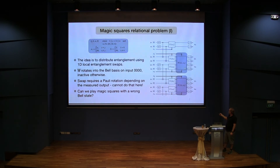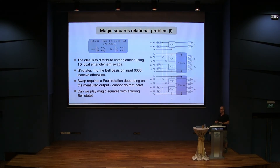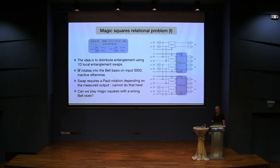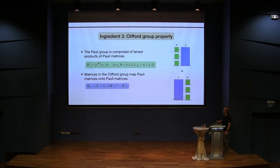This essentially encodes the entanglement swap protocol, apart from the last step, because we would have needed, depending on what we measure during the entanglement swap, to make a Pauli correction on the other qubits — but we are not doing this. The effect of not doing this correction is that we are now playing this magic squares game, but with the wrong Bell state. When we do the entanglement swap measurement, we get one of four Bell states, but which one depends on our measurement outcomes, and we would need to do a rotation to always move it to the same one.